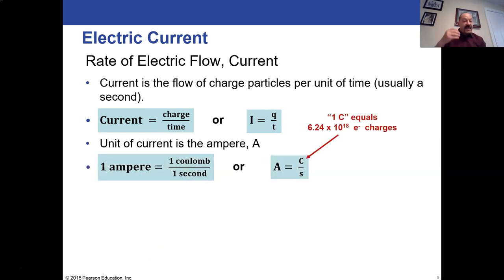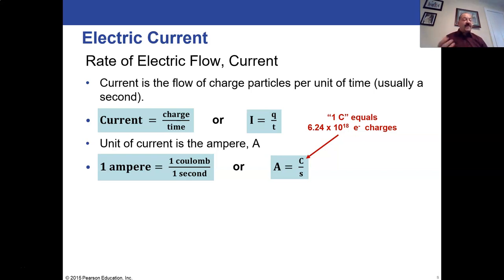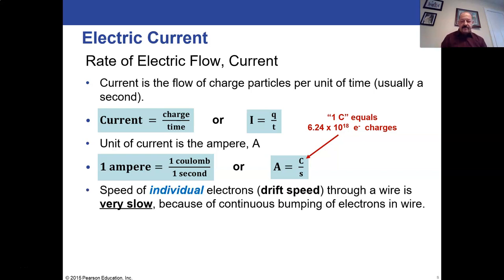Because current is charge per time, the unit is coulombs per second. A coulomb is an enormous number — six quadrillion electron charges. Coulombs per second is our unit of current, which has been named after a French scientist, Ampere. So we call them Amperes, or just Amps for short. One Ampere means one coulomb of electrons — a lot of electrons — flowing past a certain point per second.